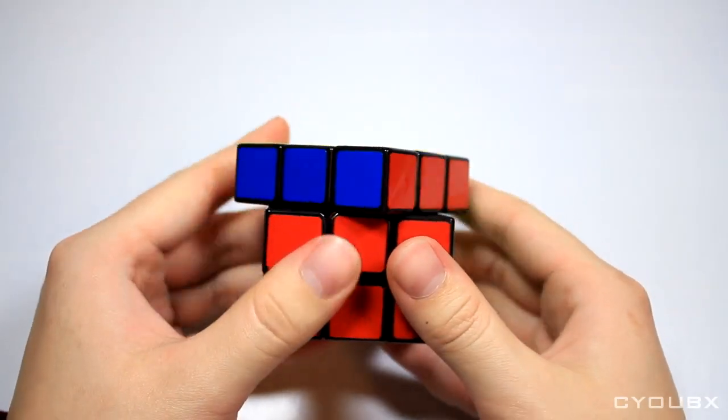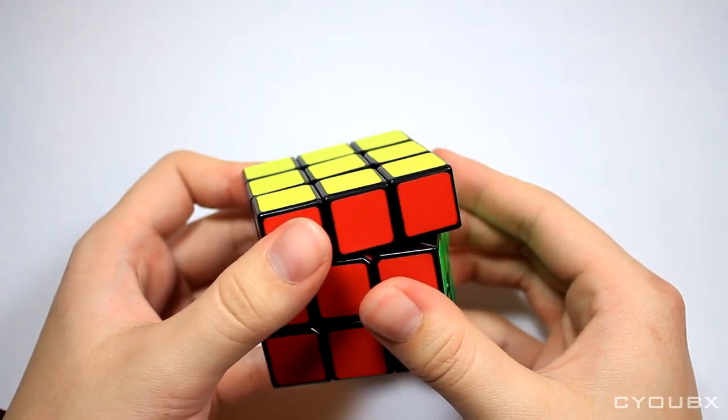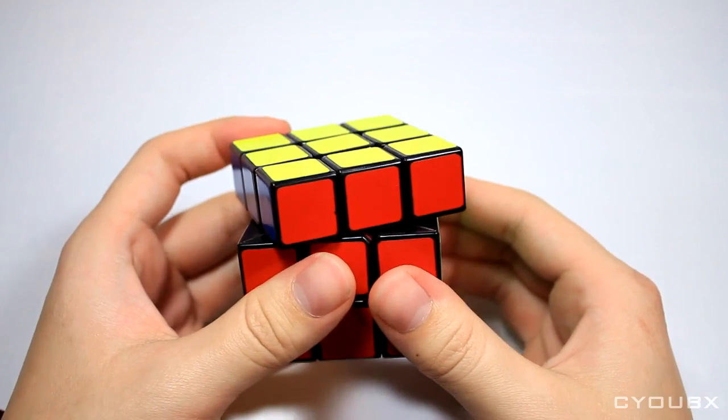I like tighter cubes, and even on my tensions, the corner cutting is over 45 degrees. The Gu Hong is still one of the best cubes for reverse corner cutting as well, at about three quarters of the piece.